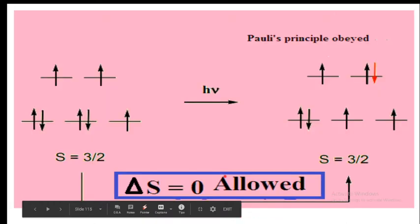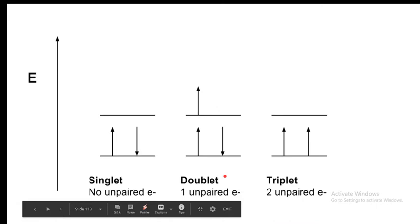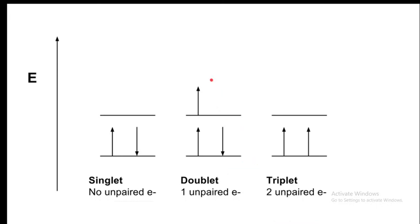Now, what about the doublet state? The doublet state contains one unpaired electron. The net spin will be plus half. Substituting in the formula 2S plus 1: 2 into half plus 1 gives us 2. That is why it is called the doublet state.